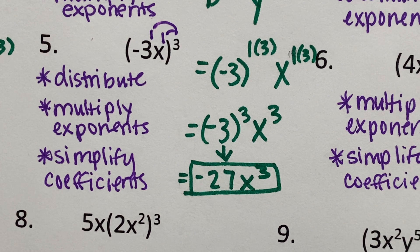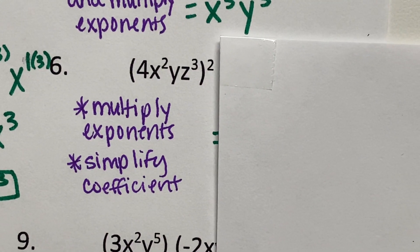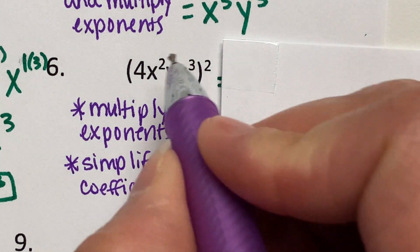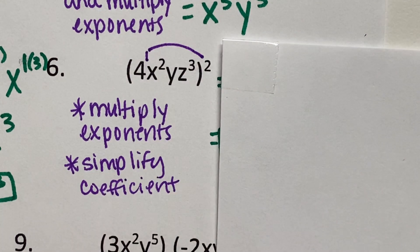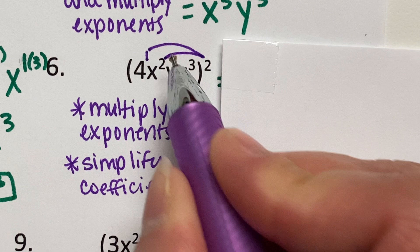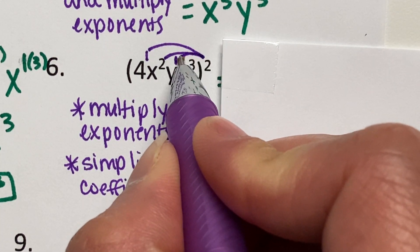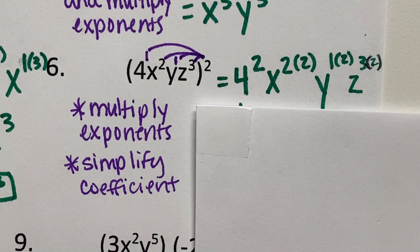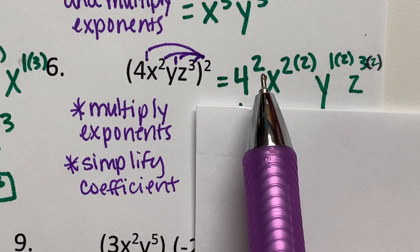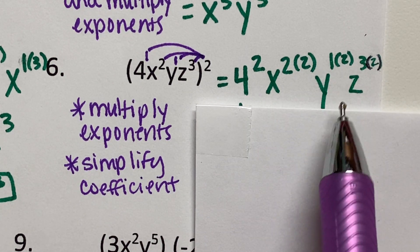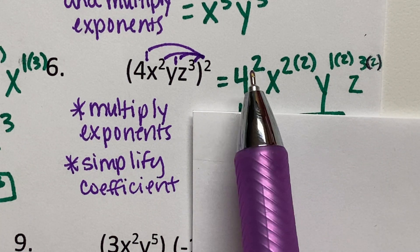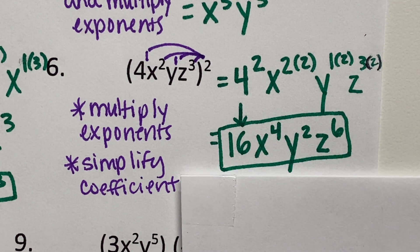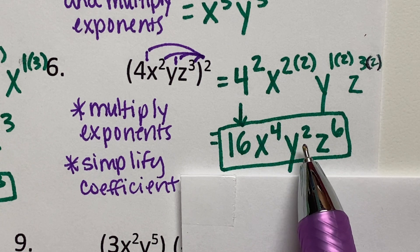In example number six, we have 4x squared y z to the third power, and all of this is raised to the second power. Four has an exponent of one, so we take two times one. x has an exponent of two, so two times two. y has an exponent of one, so two times one. z has an exponent of three, so two times three. This gives us 4 squared, x to the fourth, y squared, and z to the sixth. 4 squared means 4 times 4, which is 16. Final answer: 16x to the fourth, y squared, z to the sixth.